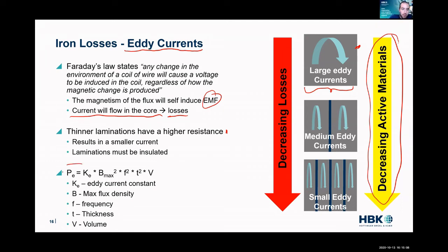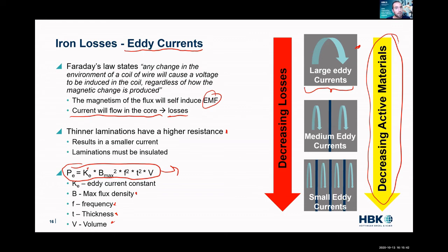We do have an equation for modeling this — not everybody goes to this level of detail, but you absolutely could. The eddy current loss equals the eddy current constant, which is a material property, times the flux density — which can be calculated from voltages and currents — times the frequency, times the thickness and volume of the conductor. This is something we can calculate as long as we have the right parameters, and it can all be implemented into the real-time systems we're doing in the e-drive.